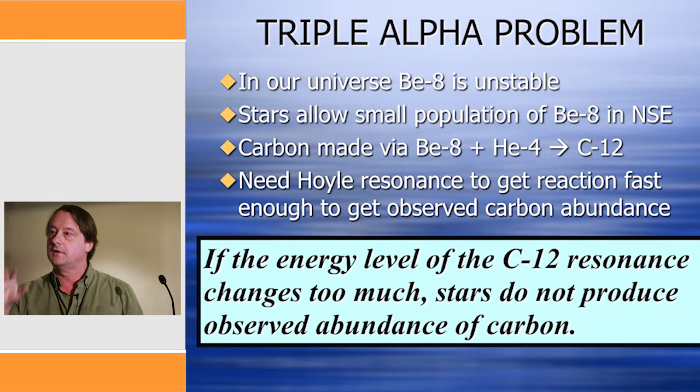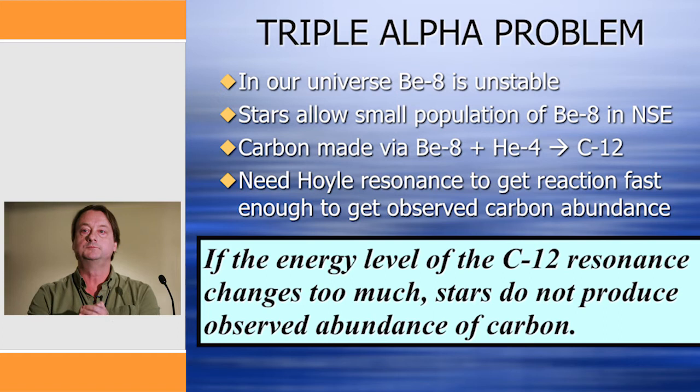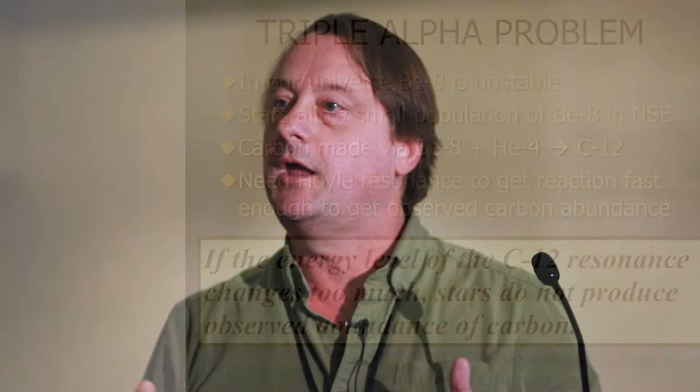Carbon is a problem. There's a famous problem called the triple alpha problem, which goes like this. In our universe, beryllium-8 is unstable. The natural way to make carbon would be to take protons, make them into helium, helium into beryllium, beryllium into carbon, carbon into oxygen, oxygen into neon. If you look at those so-called alpha elements in our universe, the most common elements are helium, carbon, oxygen, and neon — but beryllium is missing, because it's unstable.